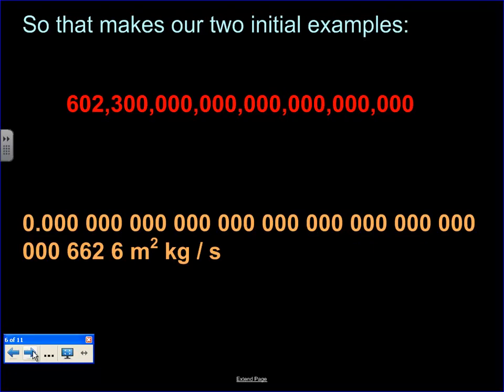Okay, so let's jump back then to our initial two examples. Again, these are really important numbers in science. We're going to apply the same process. So the first one, 1, 2, 3, 4, 5, 6, 7, 8, 9, 10, 11, 12, 13, 14, 15, 16, 17, 18, 19, 20, 21, 22, 23 spaces. So we're going to have 6.023 times 10 to the 23rd.